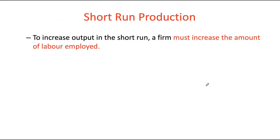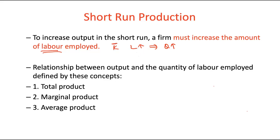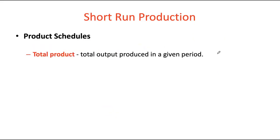In the short run production function, your output increases because of the amount of variable input employed. Assuming labor is our variable input, as labor increases we produce more; as we reduce the number of workers, output also reduces. Output is essentially dependent upon just our variable input, since we are working with some fixed amount of capital that is not changing. Let's look at the relationship between output and the quantity of labor, defined by three main concepts: total product (TP), marginal product, and average product of labor.